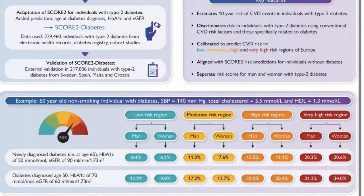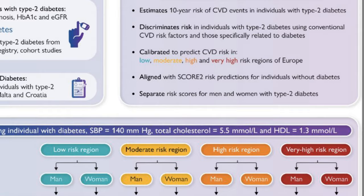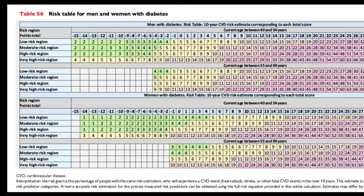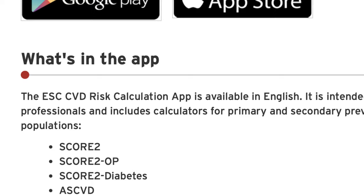The SCORE2-Diabetes uses age, smoking, blood pressure, and cholesterol, and adds diabetes-specific information: the age of diabetes onset, hemoglobin A1c, and eGFR. The score is calculated from tables for men or women, then calibrated to four clusters of countries — low risk, moderate risk, high risk, and very high risk — same as the SCORE2 charts. The score is available as a mobile app for everyday office practice and is very practical.